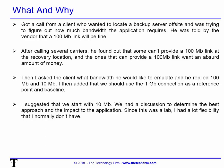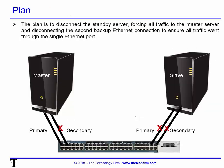We wanted to find out how well the application worked at 100 meg and at 10 meg. I added that we should also use the current one gig connection as a reference point and baseline. I suggested we start with the 10 meg — that's kind of the worst case, slowest scenario — so we can visually see if there are any issues. We had a discussion to determine the best approach and the impact to the application. Good news: this is a lab, so we had a lot of flexibility. Don't do this with a production network.